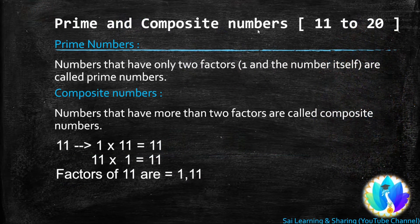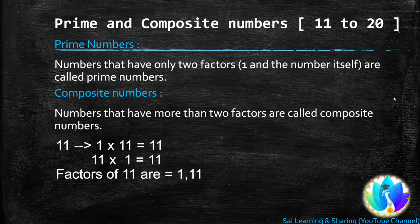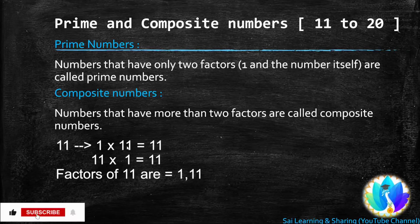Prime and composite numbers 11 to 20. We already learned in the previous video: if a number has only two factors, that number is called a prime number. If a number has more than two factors, that number is called a composite number.